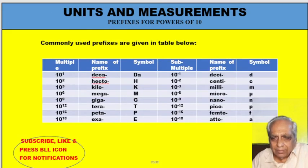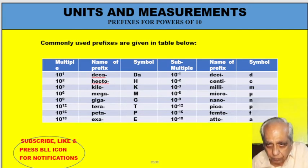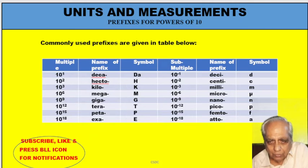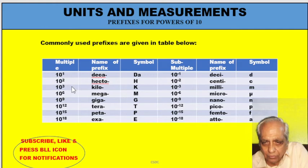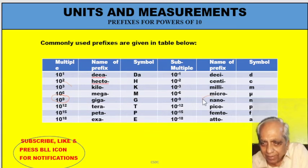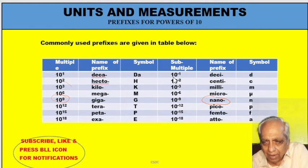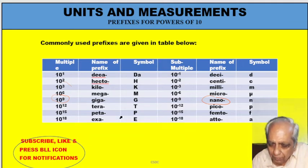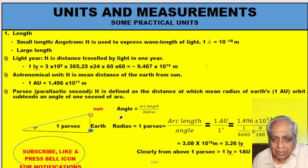Now we will look at prefixes used with SI units. For example, kilometer uses the prefix 'kilo', which means 10 raised to 3. Gigahertz uses 'giga', which means 10 raised to 9. Nanosecond uses 'nano', which means 10 raised to minus 9. All commonly used prefixes for multiples and submultiples are listed here — you should go through and learn them.